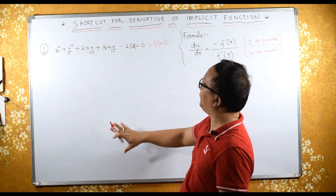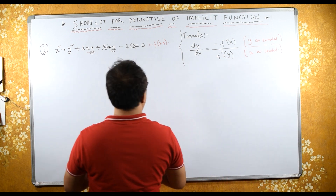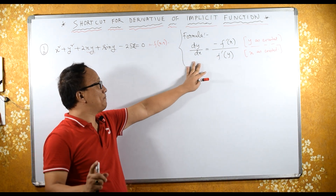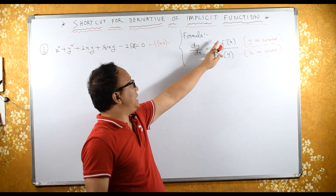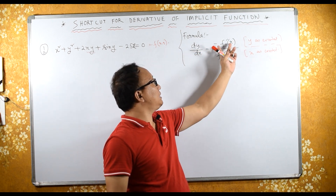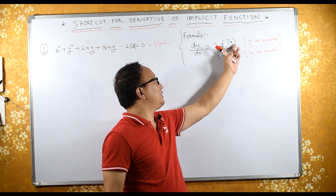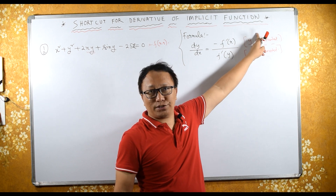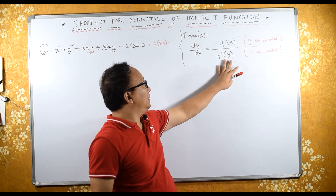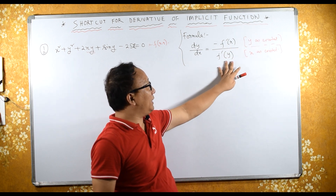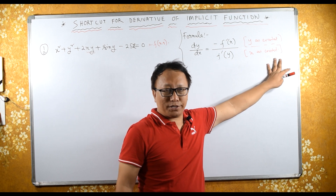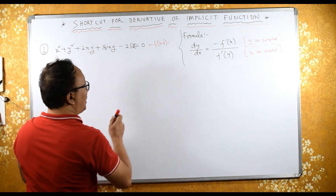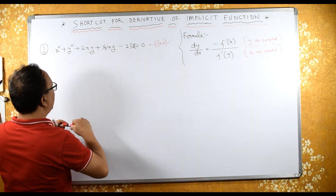For implicit functions, dy/dx can be written as minus f'x divided by f'y. In f'x, we find the differential with respect to x considering y as a constant. In f'y, we differentiate with respect to y considering x as a constant.